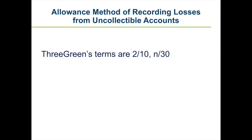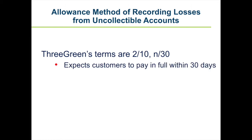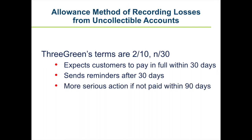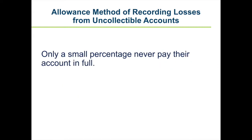3Green uses terms of 2-10 and 30 when selling to customers on account. The company expects customers to pay in full within 30 days. 3Green begins sending customers periodic reminders when their accounts are more than 30 days past due. More serious action may be taken if a customer's account is not paid within 90 days, and 3Green may stop selling on account until payment is received.